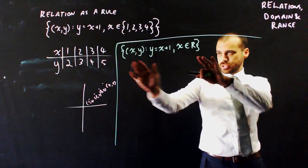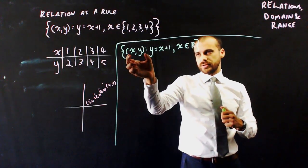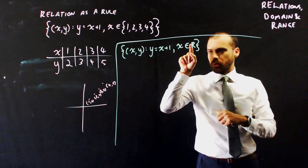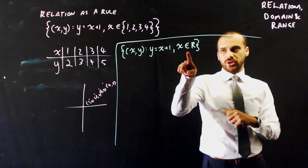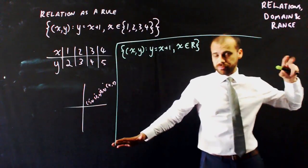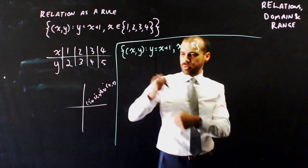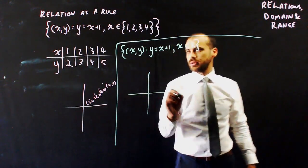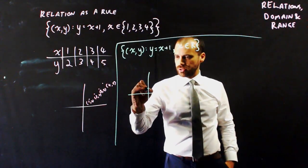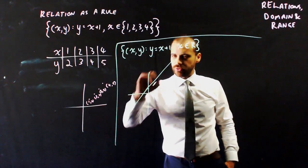So, slightly different, it says the set of ordered pairs represented by the rule y equals x plus 1, where x is in the set of all real numbers. So x can be any real number, positive or negative. Now we have a line. So now we have y equals x plus 1. So it's a line that looks like that with a gradient of 1 that goes on forever and ever.